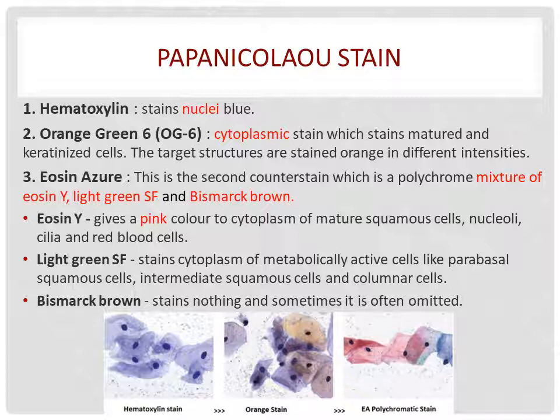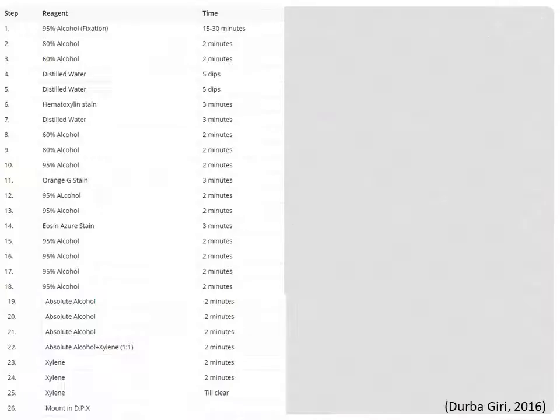For Eosin White, it gives a pink color to the cytoplasm of superficial squamous cells, nucleoli, cilia, and red blood cells. For Light Green SF, it stains the cytoplasm of parabasal squamous cells, intermediate squamous cells, and columnar cells. For Bismarck Brown, it stains nothing and is often omitted.